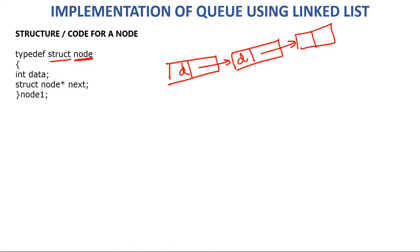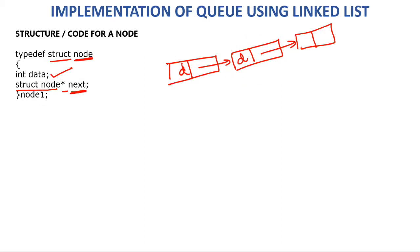The structure named 'node' has two parts. One is data — you can use int, character, or whatever you want. The second is the address part, for which we use a pointer named 'next' to keep the address of the next node. The data type of this pointer is 'struct node' — that is, the structure itself — because it's keeping the address of a node which is again of type structure.